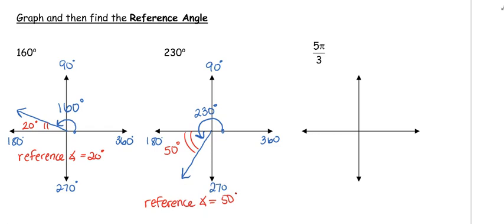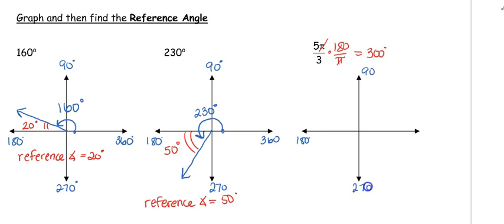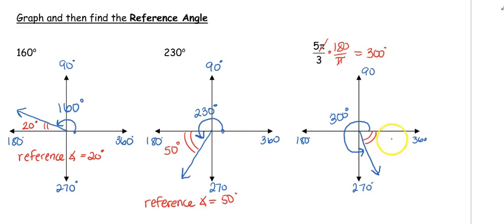Now the next one — here come those radians. You can label pi over 2, pi, 3 pi over 2, 2 pi, but most of you are going to convert this. The pi's cancel: 5 times 180 divided by 3, we end up with a 300 degree angle. So 300 degrees is going to be 30 degrees past 270. Starting at zero all the way around, that is our 300 degree angle. The reference angle is between the terminal side and the x-axis — and if this is 300, we know that we're only 60 degrees shy of 360, so the reference angle is 60 degrees.